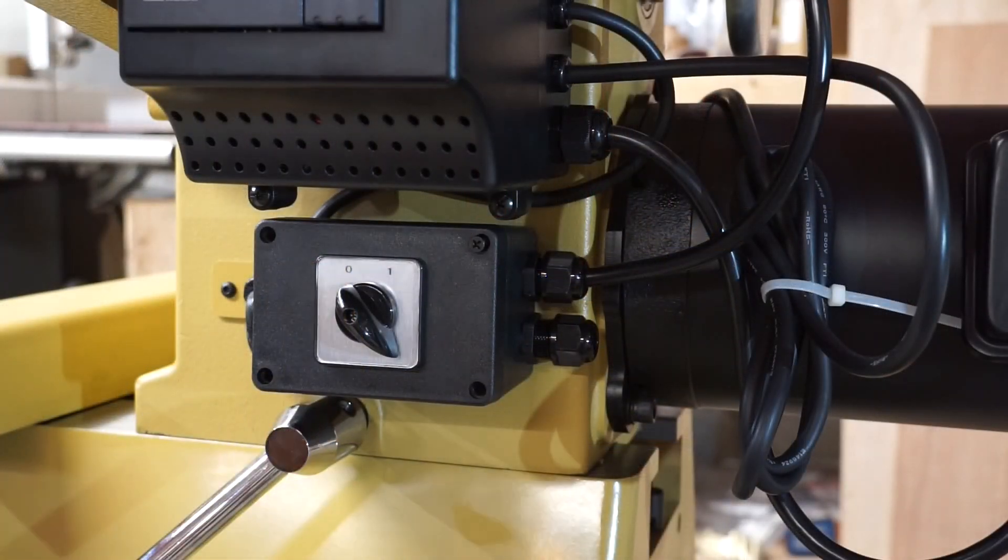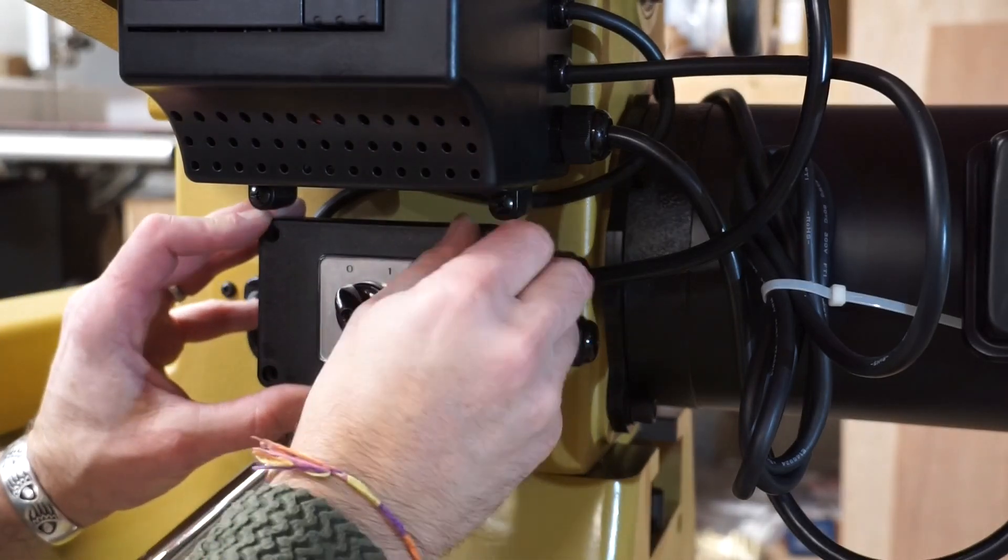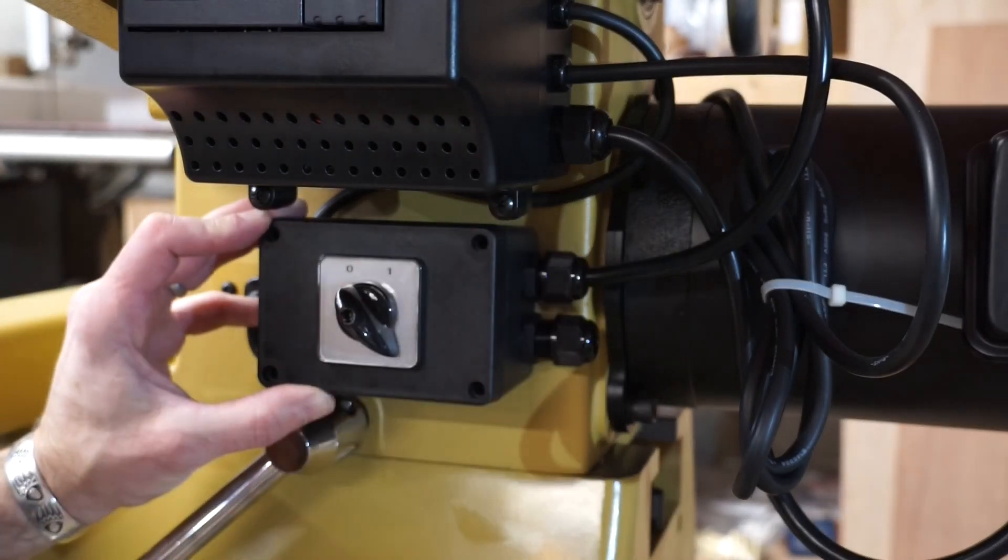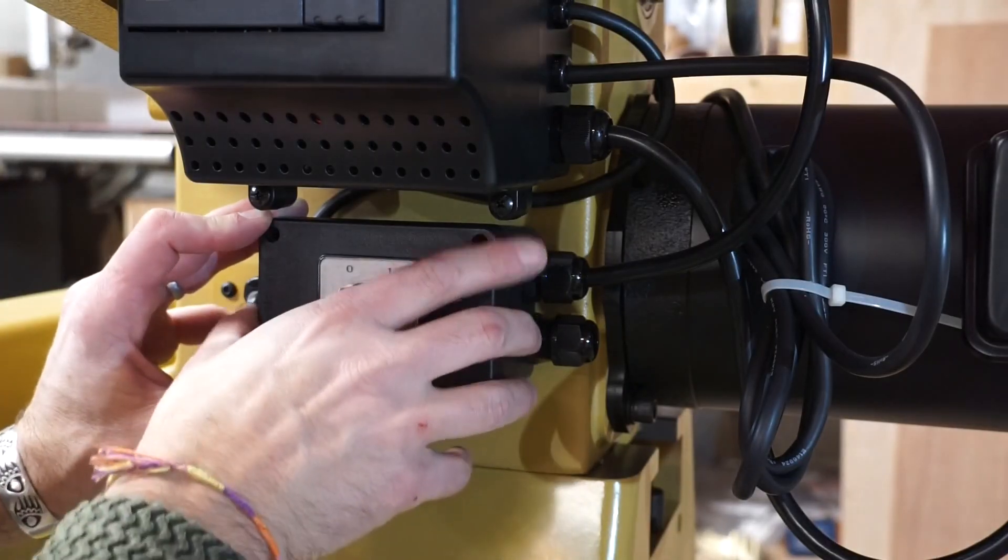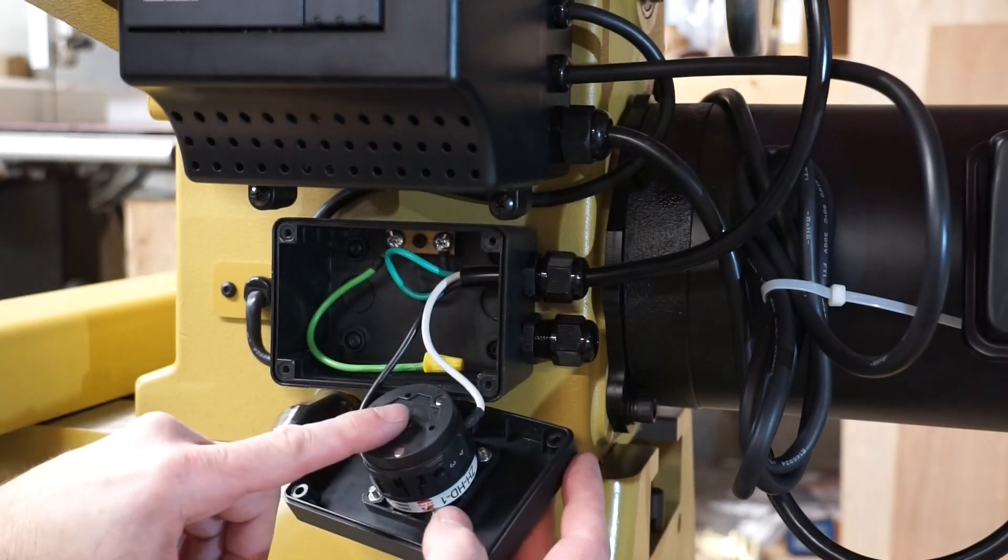At the back of the machine here we have a rotary switch that powers the lathe. Now I'm just going to remove these Phillips head screws in the back. I've already taken the other three out and this is going to expose the rotary switch.